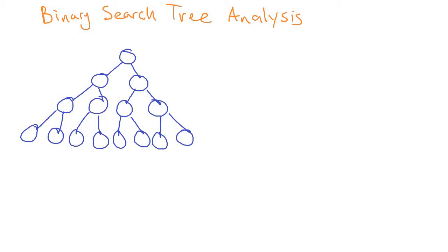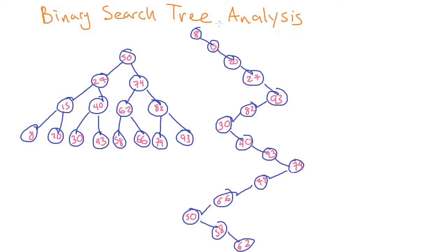But that's only in the best case. Let's fill some numbers in to look at what the worst case tree would be. Given this data, we could end up with the ideal balanced case, but we also could have ended up with a different tree that is also a valid binary search tree. It's binary because all nodes have 0, 1, or 2 children, and it's a binary search tree because it follows all the rules — everything to the right of a node is bigger, and everything to the left is smaller.